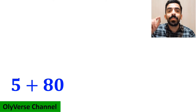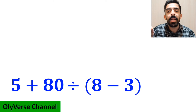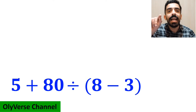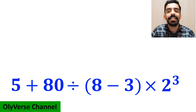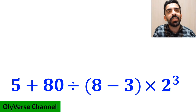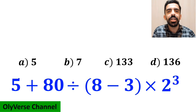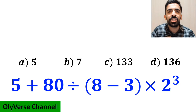What is the value of the expression 5 plus 80 divided by open parenthesis 8 minus 3 close parenthesis, then times 2 to the power of 3? Which option do you think is the correct answer to this question?